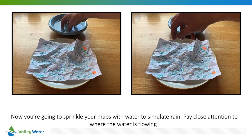Now you're going to sprinkle your maps with water to simulate rain. Dip your fingers in the bowl of water and let it fall onto your maps, just like rain from clouds. Keep doing this until you start to see the water flow through your watershed map — you may need to do this seven or eight times. While this is happening, observe where the water is flowing and how your homes and storm drains are being affected.